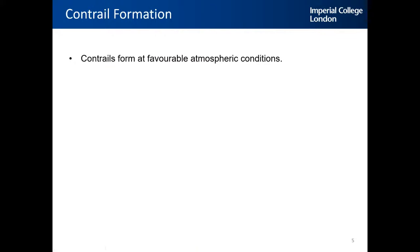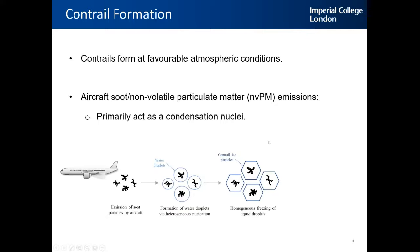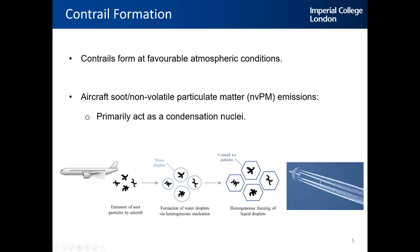What are contrails? Contrails are line-shaped clouds that form behind an aircraft when the atmosphere is supersaturated or at low temperatures under favorable atmospheric conditions. The aircraft soot or non-volatile particulate matter emissions from the exhaust primarily acts as condensation nuclei for contrail formation. If the atmosphere is supersaturated — meaning the air contains more water vapor than it can hold — water droplets form on the surface of the soot particles, like condensation on bathroom walls during a hot shower. These water droplets subsequently freeze to form contrail ice crystals.